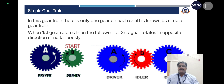Simple gear train: In this gear train, there is only one gear on each shaft. When the first gear rotates, the follower — that is, the second gear — rotates in the opposite direction simultaneously. If the driver rotates in the anticlockwise direction, the driven gear will rotate in the clockwise direction. If we need the same direction of rotation from driver to driven, we have to include an idle gear, as shown in Figure 2.